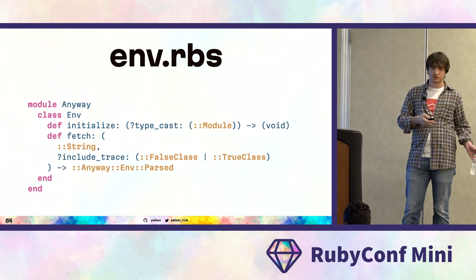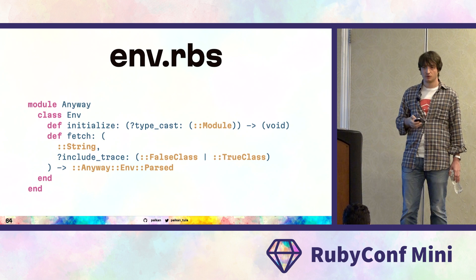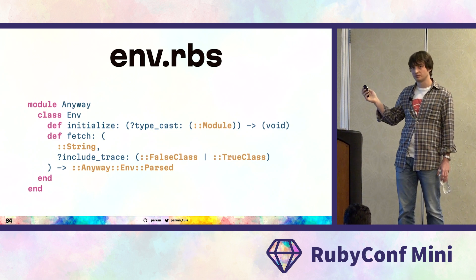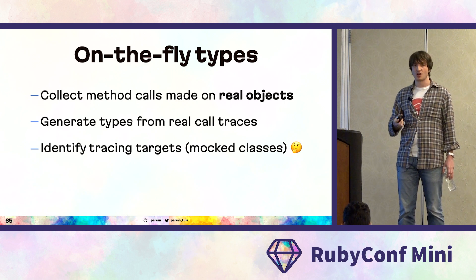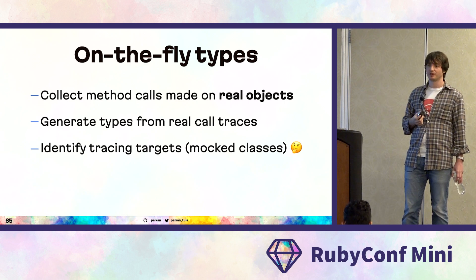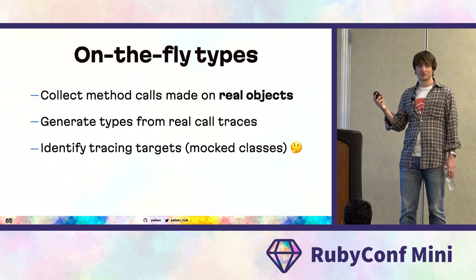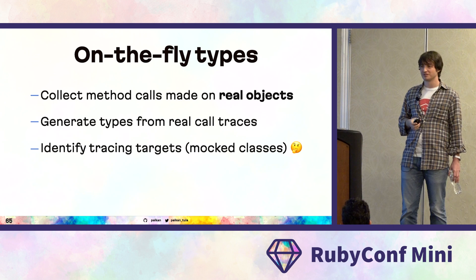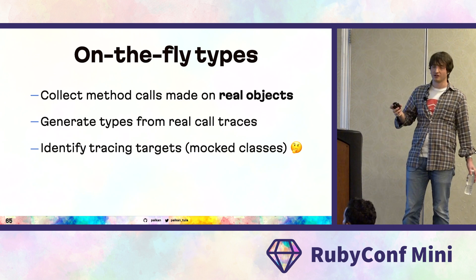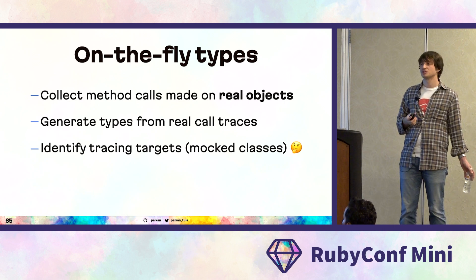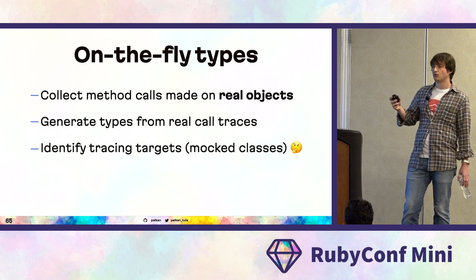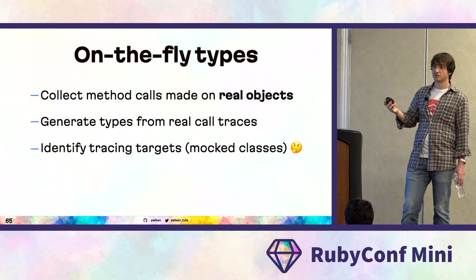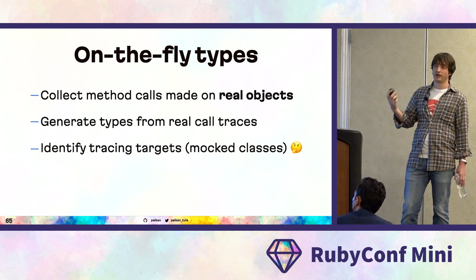The problem is we cannot collect all possible call traces for the entire application — running a Ruby test suite involves millions of method calls, which would make your tests very slow. We need to selectively look only for the classes, modules, and objects and methods that we used in our fake objects. For that, we need to analyze which objects are mocked in the tests — that's the trickiest part.